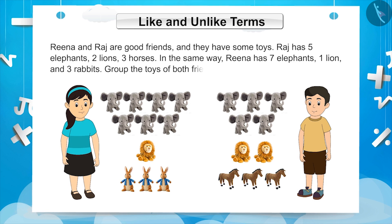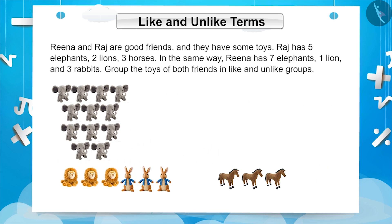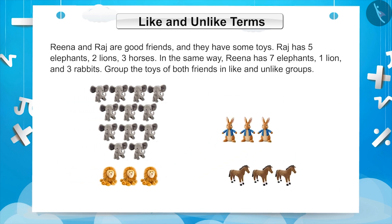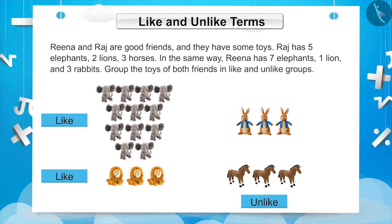Divide the toys of both friends into like and unlike groups. To make an equal group, we will place the elephants of Rina and Raj in one place. Similarly, we will keep their lions in another place. In order to make groups of the same kind, we have to place the rabbits and horses separately. As you must have noticed, we have made groups of elephants with elephants and lions with lions because they are similar, whereas rabbits and horses are not similar, so they have formed a separate group.